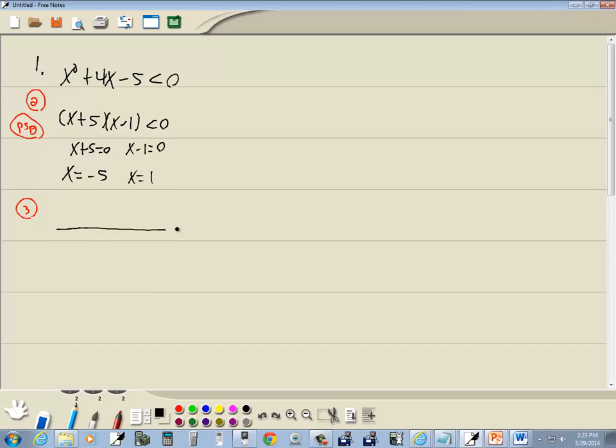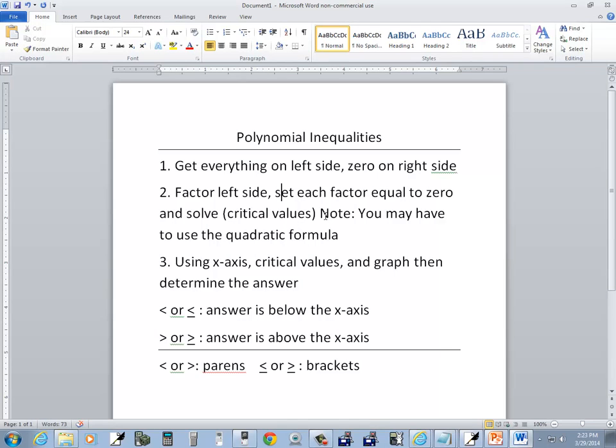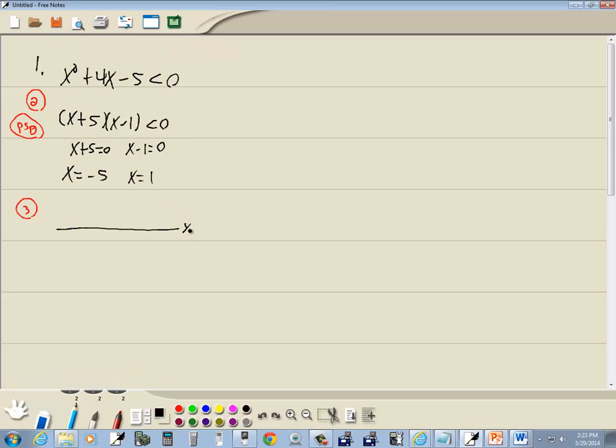Now step three. It says using the x-axis. So here's our x-axis. The critical values. We came up with two critical values. We're going to have a negative 5 and we'll have a positive 1. Now the critical values split them into intervals. So here's an interval and here's an interval. Clear over here is negative infinity. Clear over here is positive infinity. This first interval is from negative infinity to negative 5. This second one is from negative 5 to 1. And this last interval is from 1 to positive infinity.